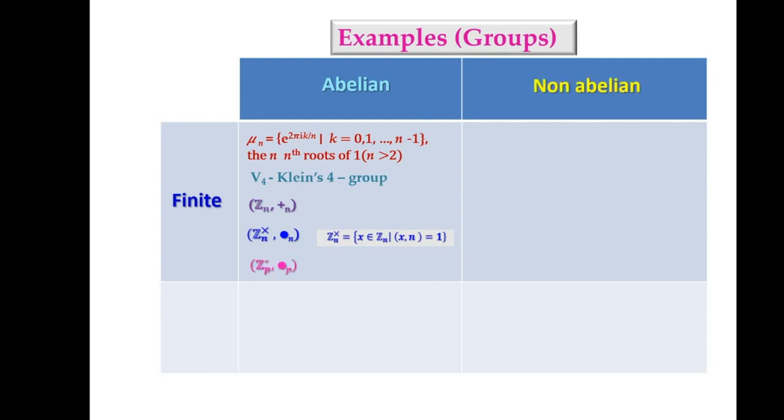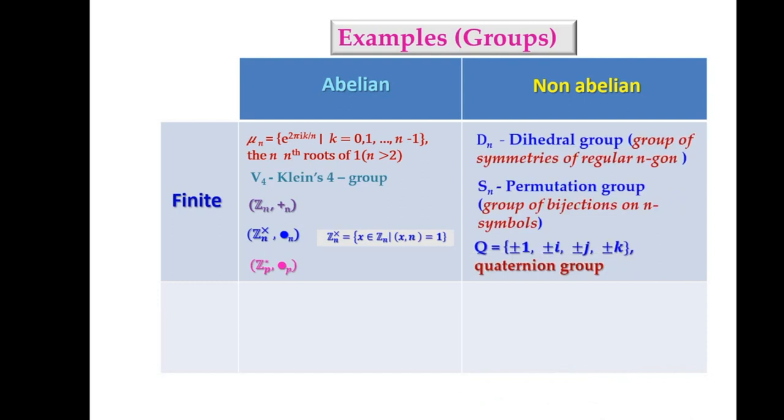collection of all congruence classes modulo p where p is a prime number under multiplication modulo p. And then for finite non-abelian group we have dihedral group, permutation group and quaternion group.